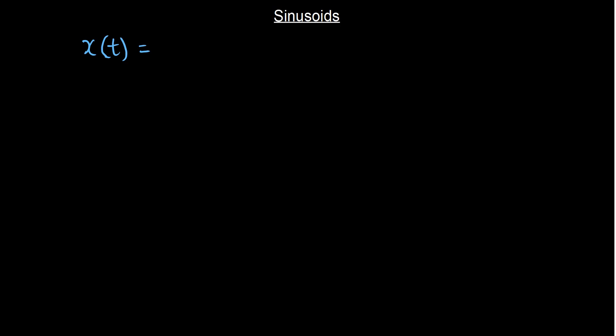In the previous module we introduced sinusoids, both continuous time and discrete time. We defined the continuous time sinusoid as x of t equals A cos(2π F t + θ). Without loss of generality, let's consider A as 1 and θ as 0 for simplification.